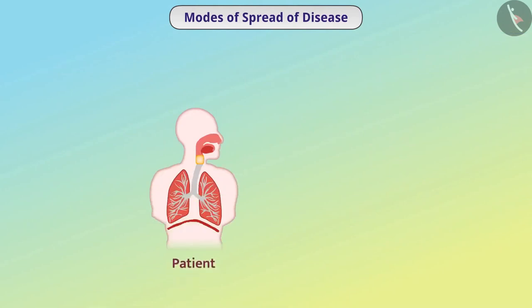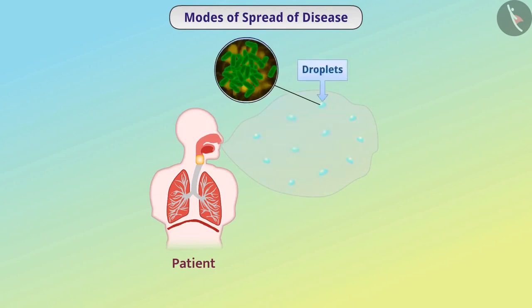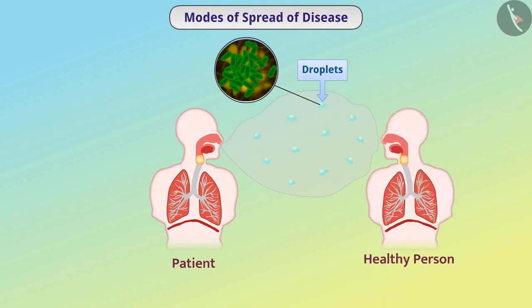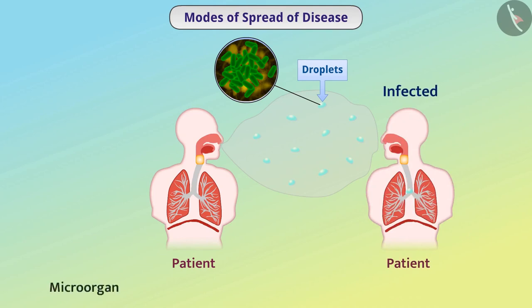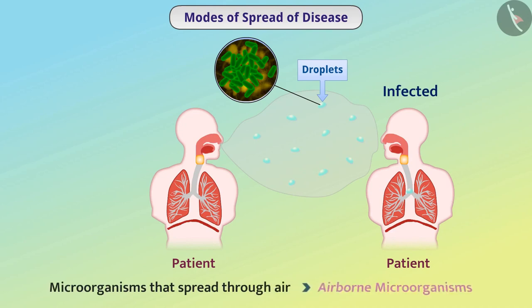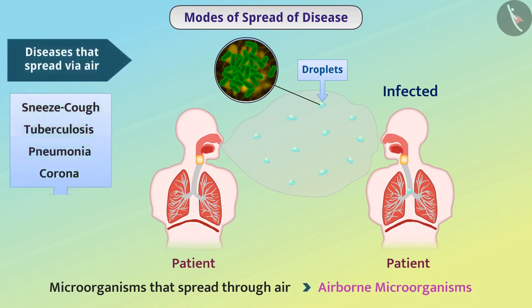When a person sneezes or coughs, some droplets come out of their mouth. These droplets contain microorganisms. If any other person is near the patient, the droplets enter their body and infect the healthy person. Microorganisms that spread through air are called airborne microorganisms, and the diseases that spread through air are called airborne diseases. So, if a person is suffering from an airborne disease, they should not go to crowded places.